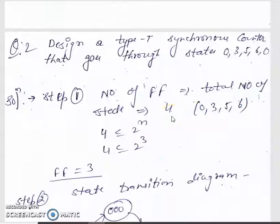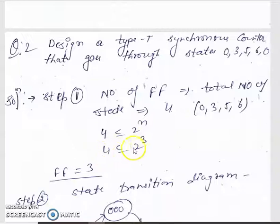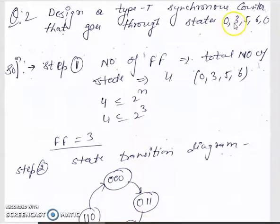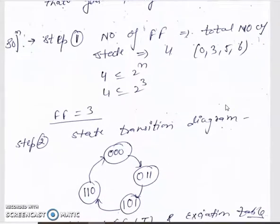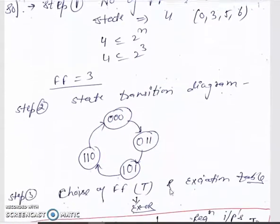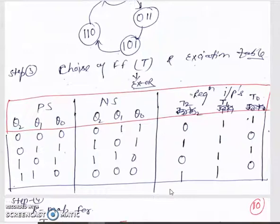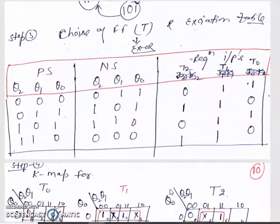Mod 4 ≤ 2^n. Since 2^2 = 4 is not strictly greater than 4, we use 2^3 = 8, so 3 flip-flops are required. The state transition diagram is: 0 → 3 → 5 → 6 → 0 → 3 and so on, as given in the problem. We choose the T flip-flop and write the excitation table for the counter.